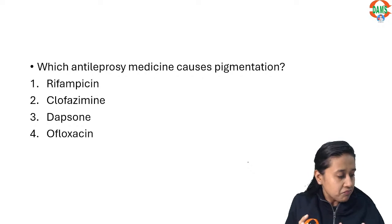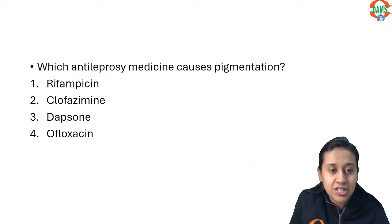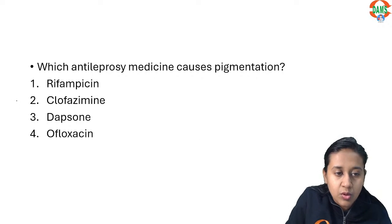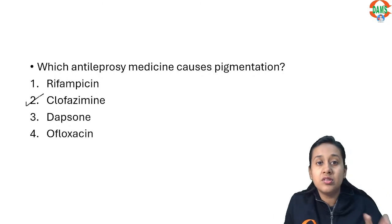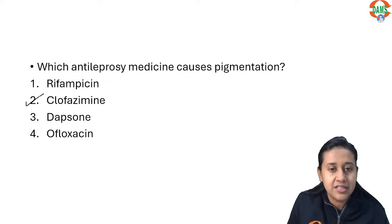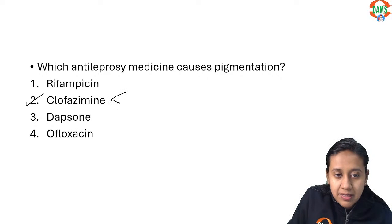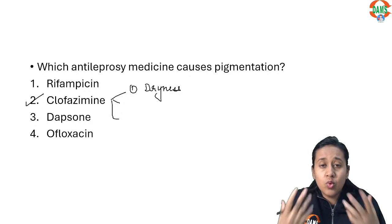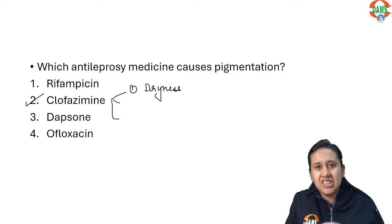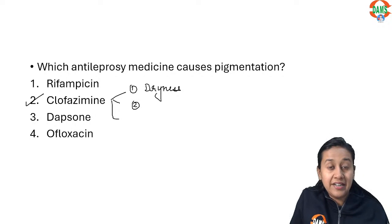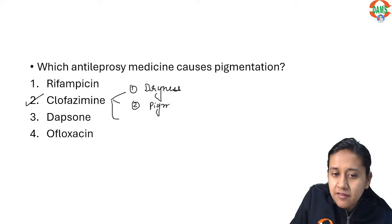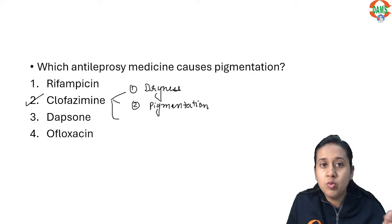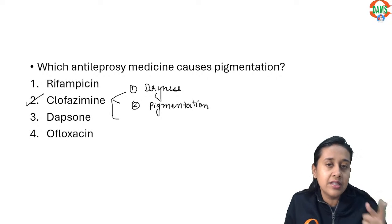The next question is an integrated question from pharmacology and dermatology: which of the following anti-leprosy medication causes pigmentation? This is a very easy question — the answer is clofazimine. Clofazimine has three main side effects. First is dryness — the patient develops ichthyosis, the skin becomes very dry, and this is the most common complaint of leprosy patients on MDT. Second, and very important, is pigmentation. Leprosy patients have a very characteristic darker hue, especially on exposed parts, due to clofazimine included in multi-drug therapy.